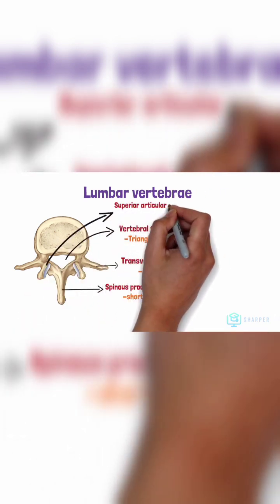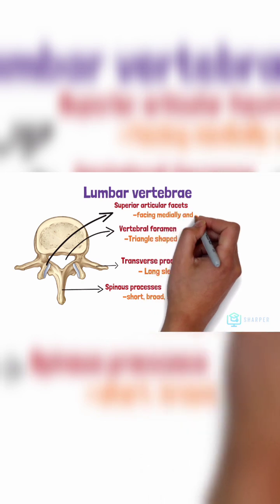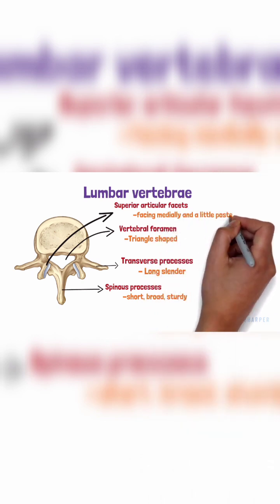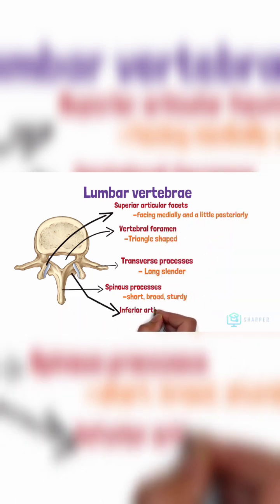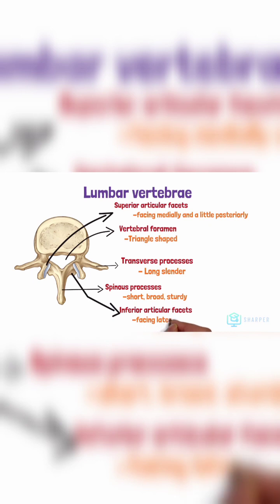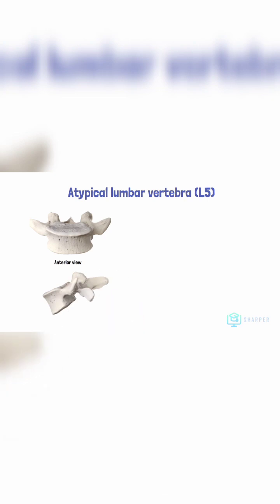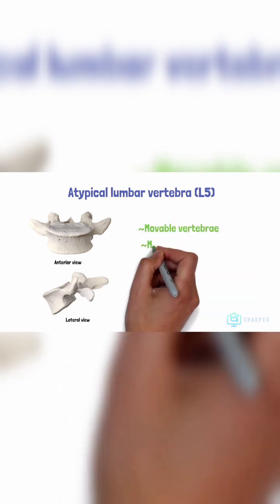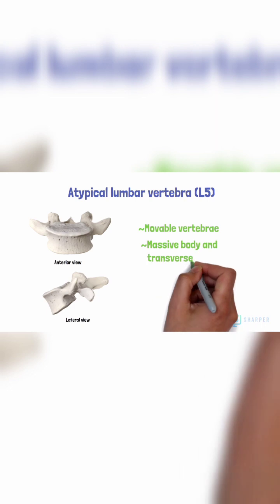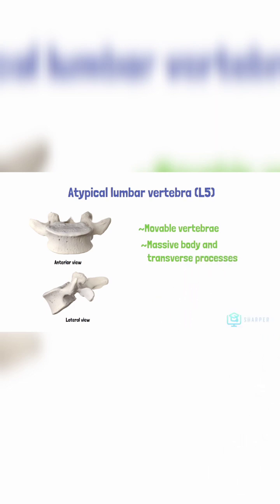The superior articular facets are in the sagittal plane mainly facing medially and a little posteriorly, while the inferior articular facets are also in the sagittal plane mainly facing laterally and slightly anterior, allowing each lumbar vertebra to articulate well with the adjacent vertebrae. L5 is atypical in that it is the largest of the movable vertebrae, with the most massive body and transverse processes.